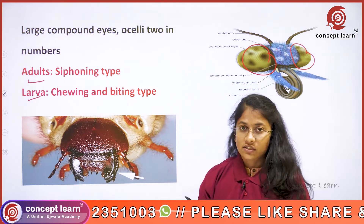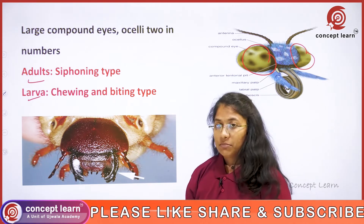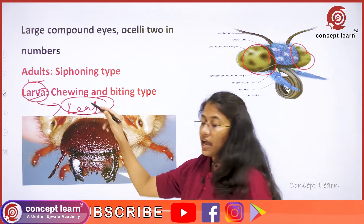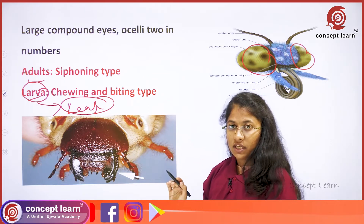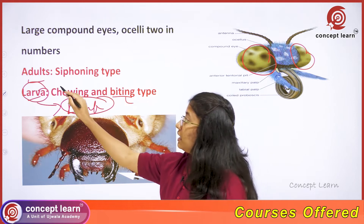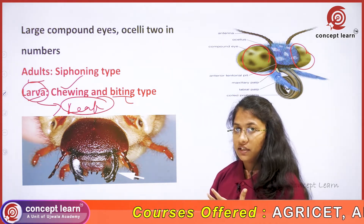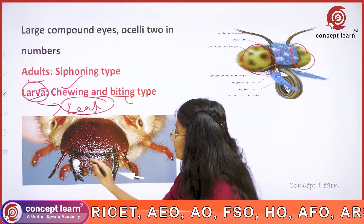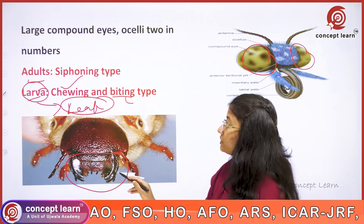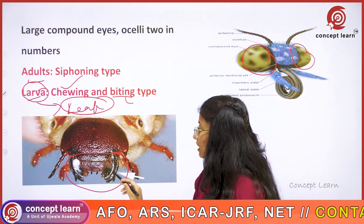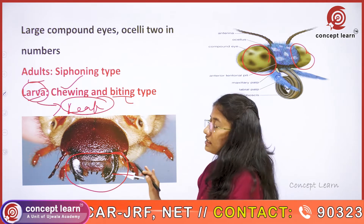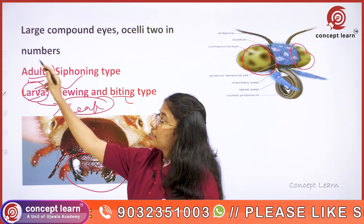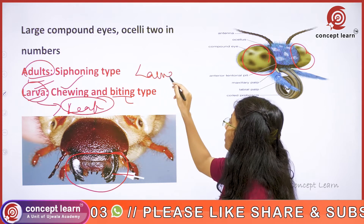Mouthparts differ between the larval stage and the adult stage. In the larval stage, the insect generally consumes leaf parts — it must first bite and then chew the leaf material in order to ingest it, similar to how we chew with our teeth. This biting and chewing type of mouthpart, with mandibles, is specific to the larval stage.